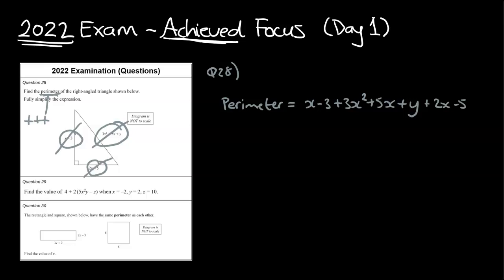So let's start off with our perimeter. It's going to be x minus 3, which is the first side, and we're then going to add 3x squared plus 5x plus y. And then finally, plus the 2x minus 5. There's a few different ways you could do this, depending on which way you pick them, but I'm going to start off with my x squareds, then my x's, then my y's, and then my numbers. You could have them in any order, and your answer would be perfectly fine. So x squared's easy, because there's only one x squared there, so that's going to be 3x squared.